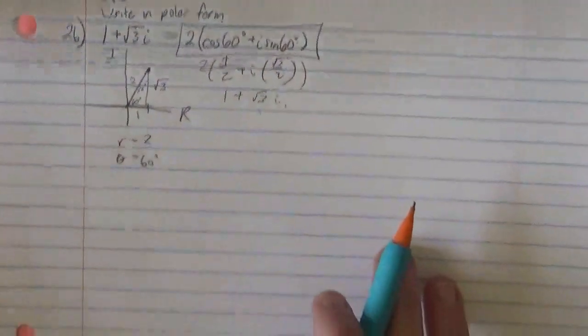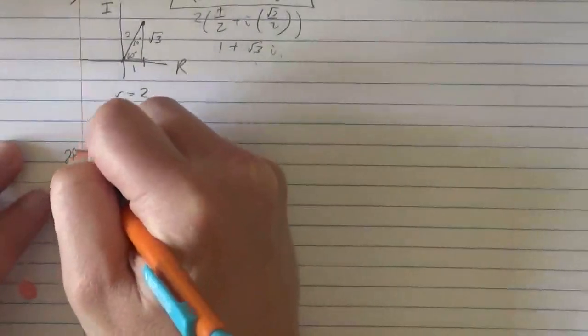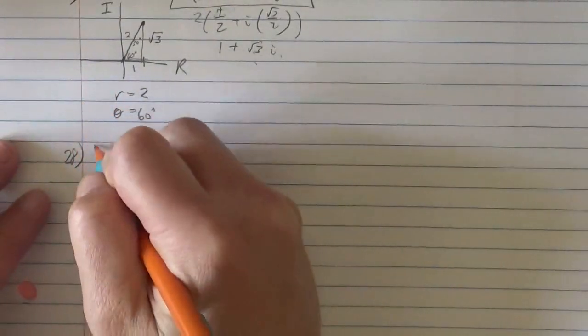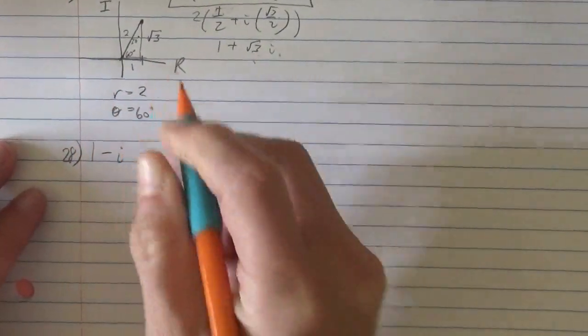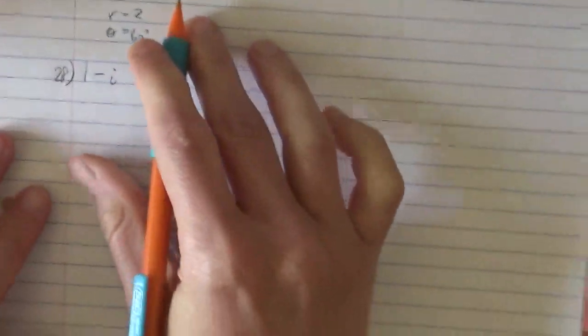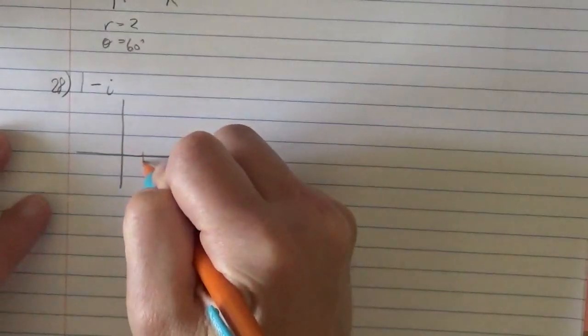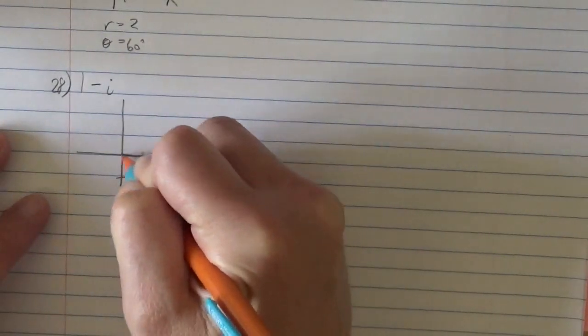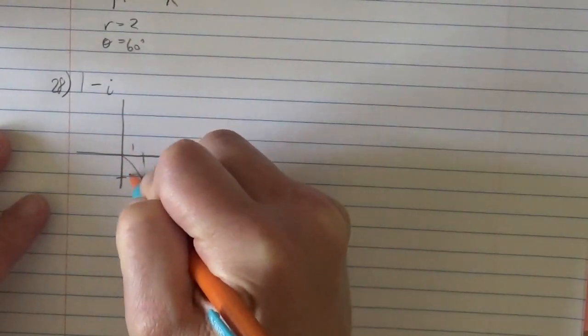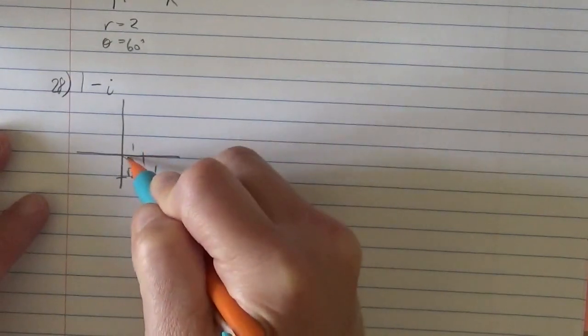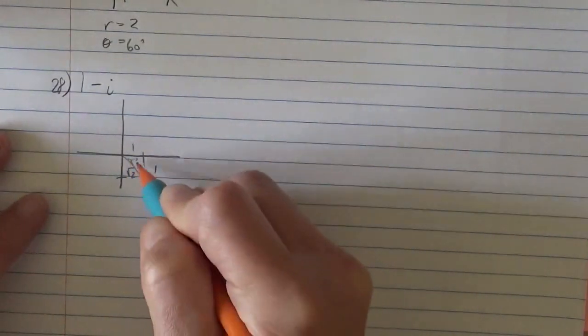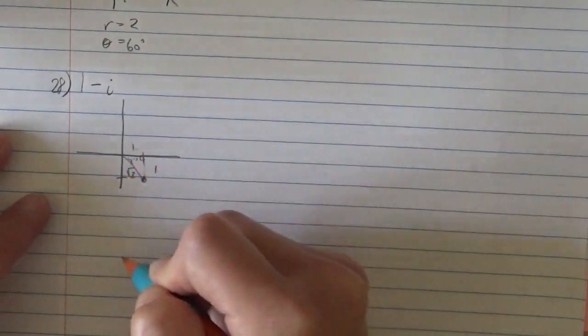So now let's kind of get rolling. That was 26. We'll do 28. We'll just keep going with these evens. So we have 1 minus i. We write just a quick sketch first, it'll help a lot. So 1 on the real, negative 1 on the imaginary. So we have 1, 1. And again, we have these triangles that we recognize. It's a 45, 45, 90 triangle. So 1, 1, root 2.